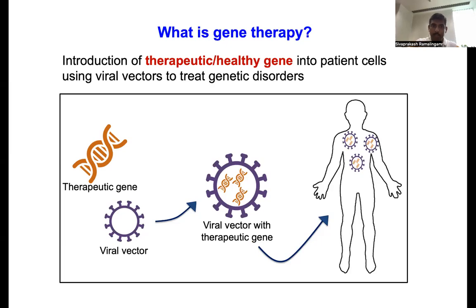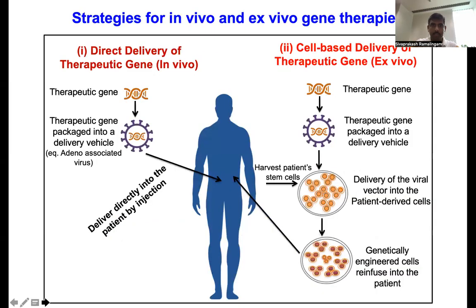You take a therapeutic gene — the wild-type gene with appropriate signaling molecules — and package it into a viral vector. It can be an adeno-associated viral vector, a lentiviral vector, or a retroviral vector, which can then be infused into the patient.